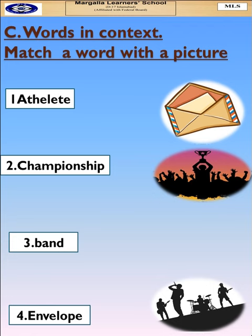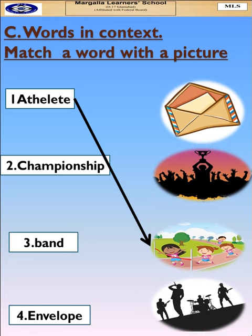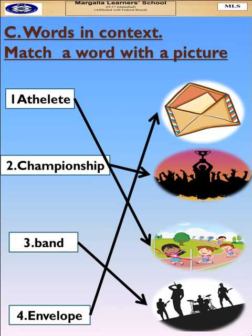Now let us see Part C — words in context. We are done with our words in context, and you know the meanings of these words as well. You have to match a word with a picture. Athlete — championship — this one is the correct picture. Band — and envelope.